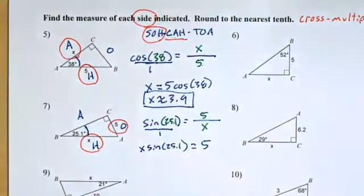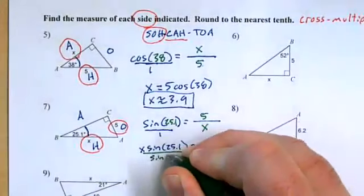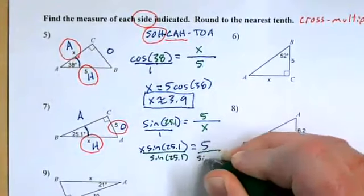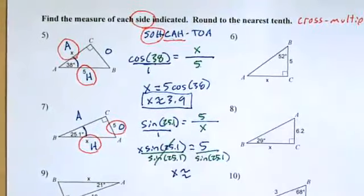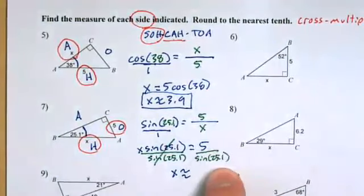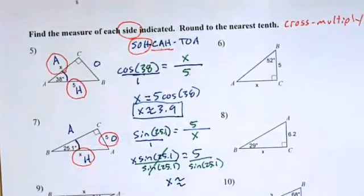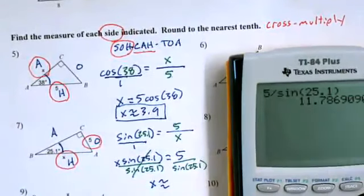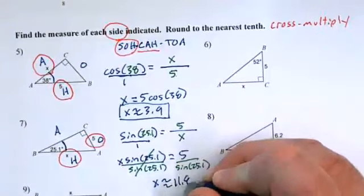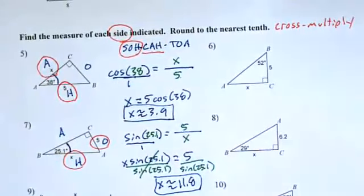Oh, we're so close. All I need to do now is divide on both sides by sine 25.1, and then I'll get the X by itself. Cancel. X is about, and I'll let my calculator do the work here. I'm doing 5 divided by sine 25.1. My calculator is coming up with about, if I rounded to one decimal place, 11.8.